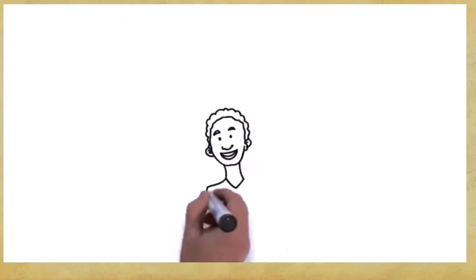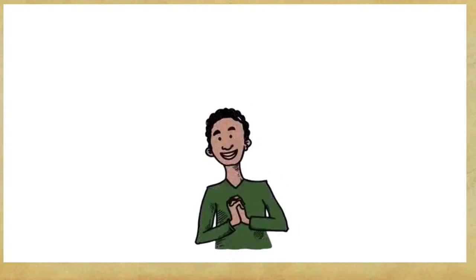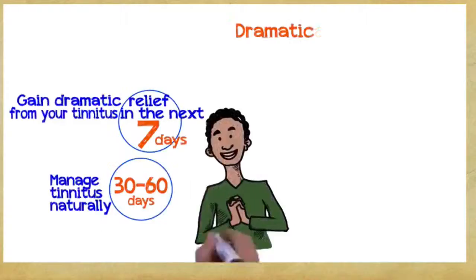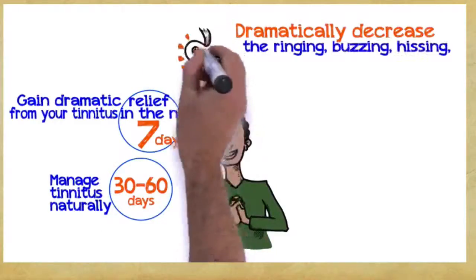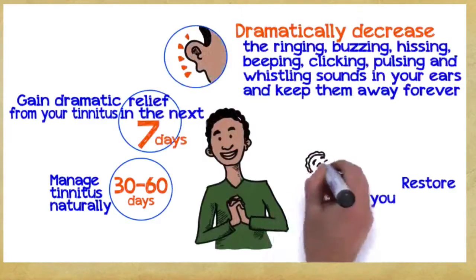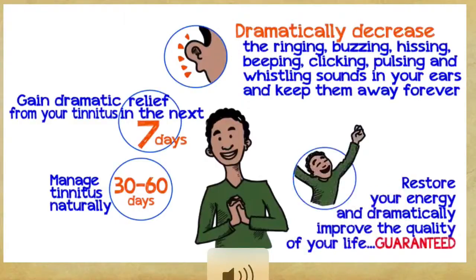So what can you gain if you embrace these three easy principles? Well, you can manage tinnitus naturally within 30 to 60 days, gain dramatic relief from your tinnitus within the next seven days, dramatically decrease the ringing, buzzing, hissing, beeping, clicking, pulsing, and whistling sounds in your ears and keep them away forever, restore your energy and dramatically improve the quality of your life, guaranteed.